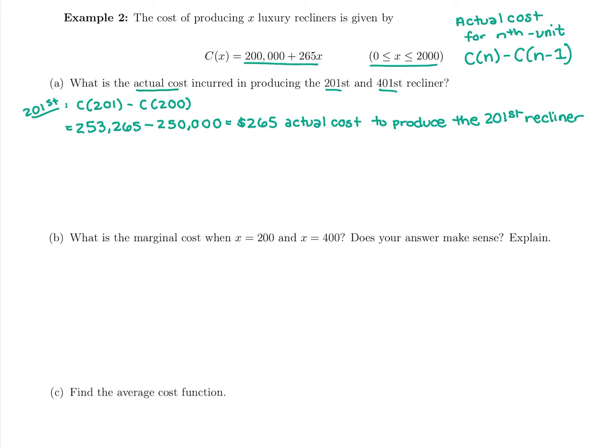So comparing it to the 401st recliner, I would pause this video and plug it in yourself, make sure you get the same answer, practice again using that same formula. It's a long one: plug in the number you want to know, so in this case the 401st, minus plugging in the number before it. You're plugging into this total cost function here and seeing what you get.